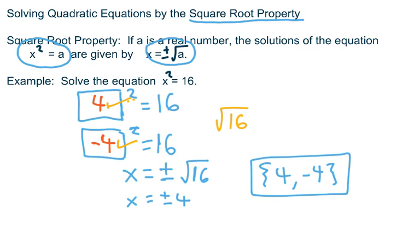So that's the square root property. Very simple. If your equation looks like x squared equal a number, then the solutions are given by x equal plus or minus the square root of that number.